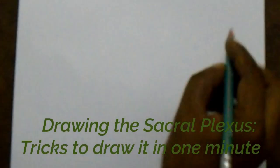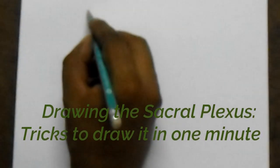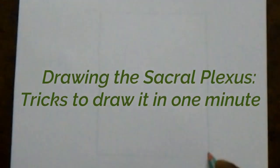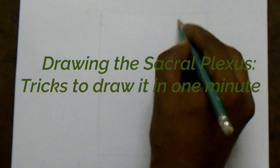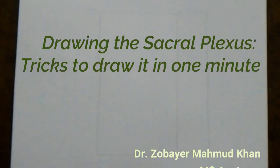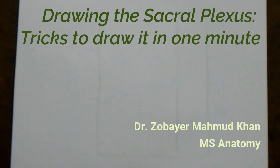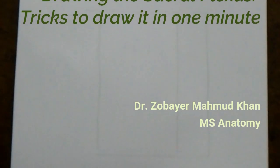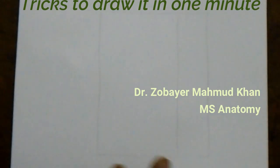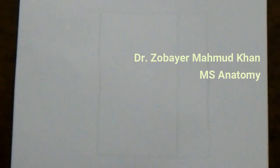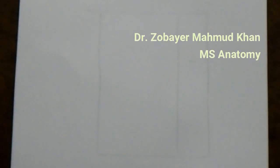Before drawing the sacral plexus, we will draw a box and divide it into two portions. Unlike the brachial plexus, there are no divisions arranged as roots, trunks, divisions, cords, and branches here. Some branches arise from the divisions and some branches arise from the rami. So let us draw the plexus.